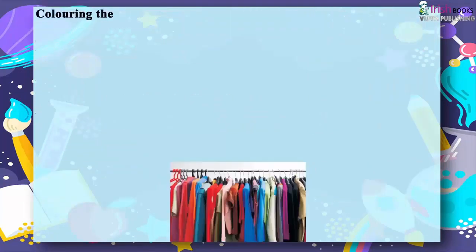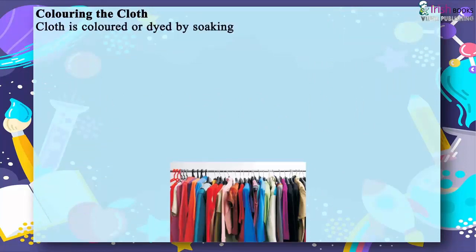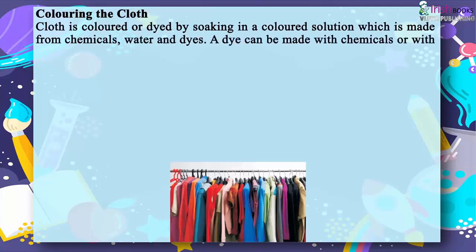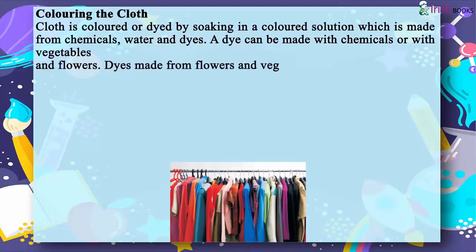Cloth is colored or dyed by soaking in a colored solution, which is made from chemicals, water and dyes. A dye can be made with chemicals or with vegetables and flowers.